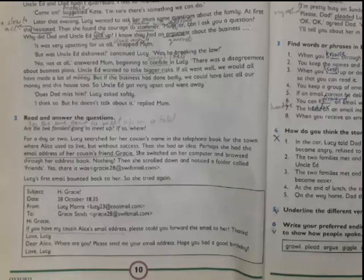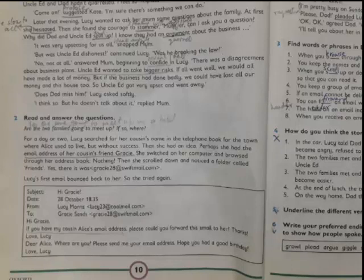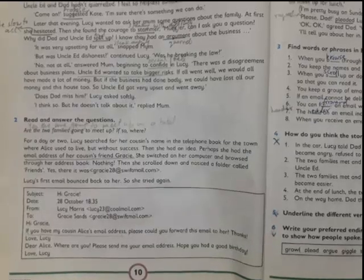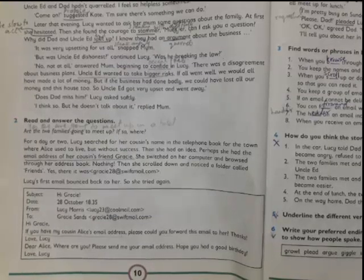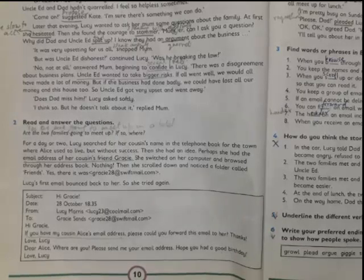You can read how she has written an email. Hi Gracie, if you have my cousin's email - Alice's email address - please could you forward this email to her? Thanks. Now she's asking that if you have my cousin's email address, you must forward my email. And the email's content is: Dear Alice, where are you? Please send me your email address. Hope you had a good birthday. Love Lucy. So it was the email which she wanted to convey to her cousin.